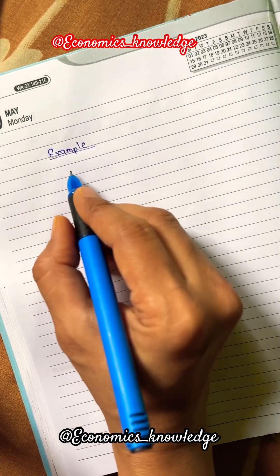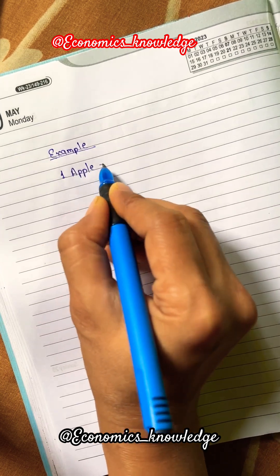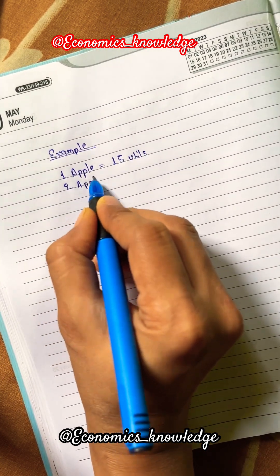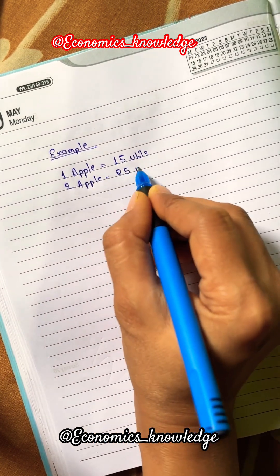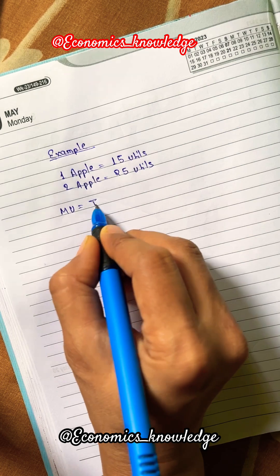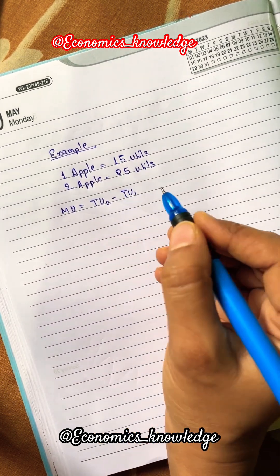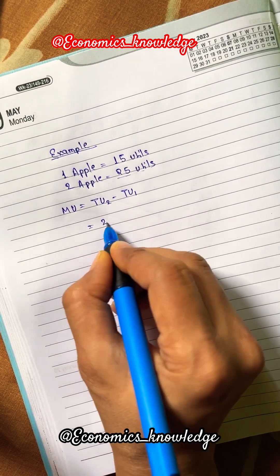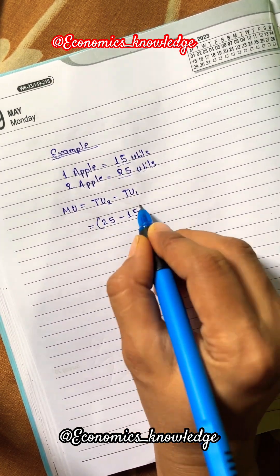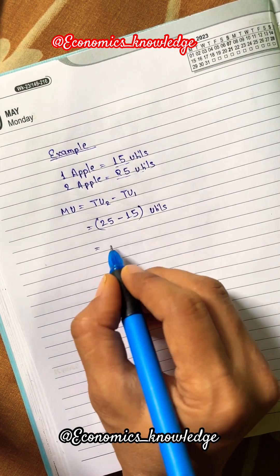Now let's see an example. Suppose you are hungry and you ate one apple — you get 15 utils of satisfaction. When you ate the second apple, your total utility goes up to 25 utils. So MU = TU(n) − TU(n−1) = 25 − 15 = 10 utils. That is, the marginal utility of the second apple is 10 utils.